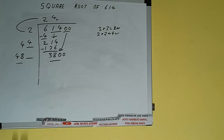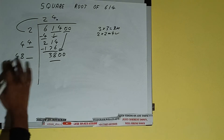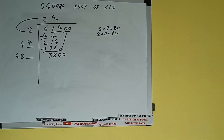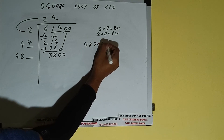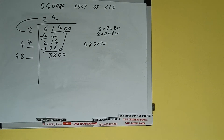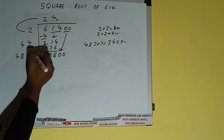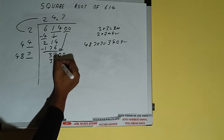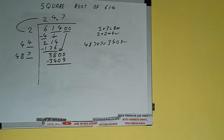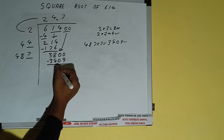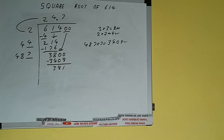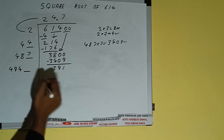Compare this 48 and 380. 48 times 8 is 384, so we cannot try 8 times — we have to try 7 times. 487 into 7 we can try and we'll get 3409, which is good. So 7 here and 7 here — 3409 subtract — and we'll be left with 391.